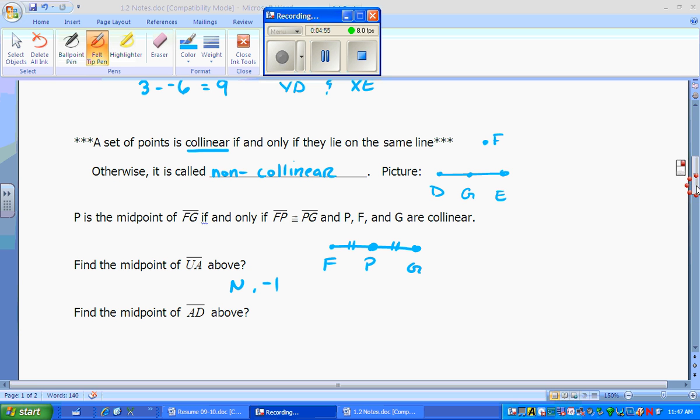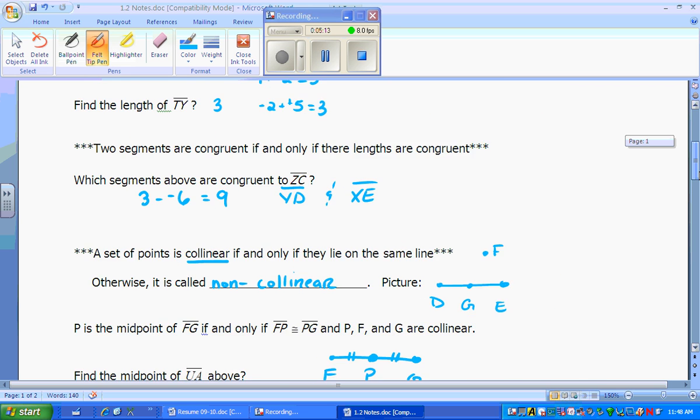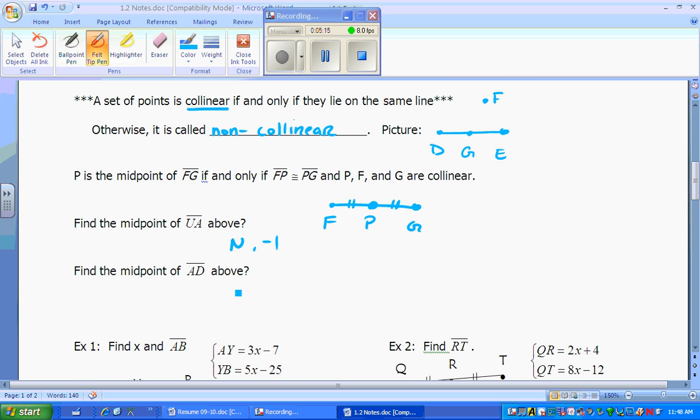Now for the midpoint of A, D. Let's scroll up. A, D goes from here to here. If we go over 1, we're at B. If we go over 1, we're at C. There's no number in between there. So it's right in the middle here. So we would be at 2.5 and there would be no letter for that. So you can't give a letter. You would give 2.5.